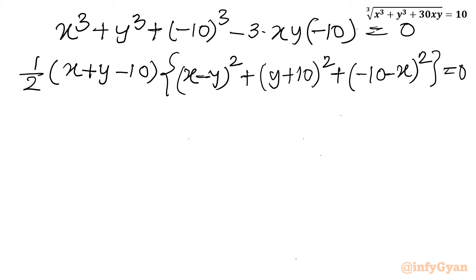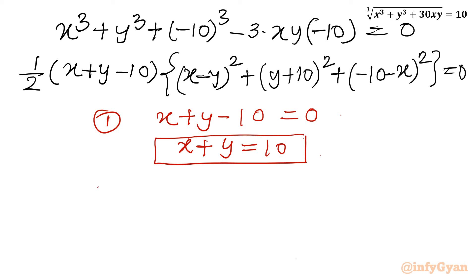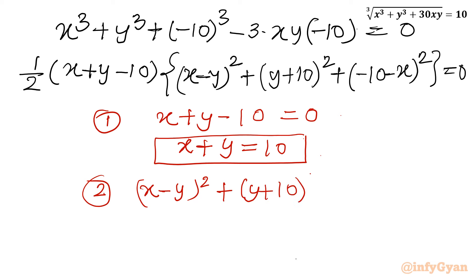Now we need to write two equations from here as this product is 0. The first equation is: x + y - 10 = 0, which gives x + y = 10. For the second equation, the sum of squares: (x - y)² + (y + 10)² + (x + 10)² = 0, since (-1)² = 1.